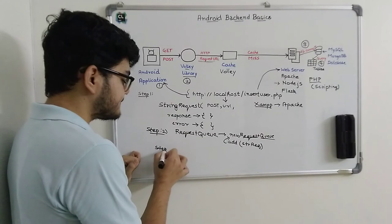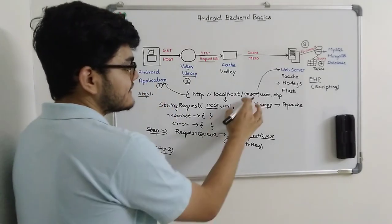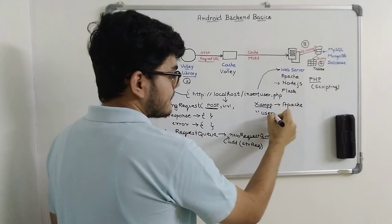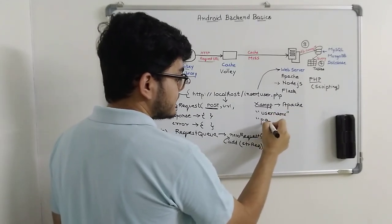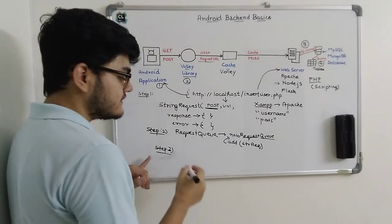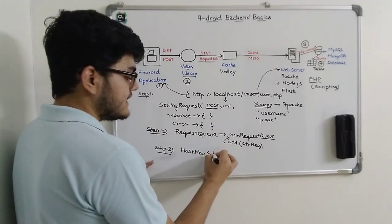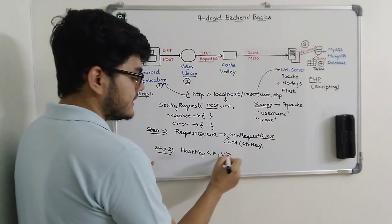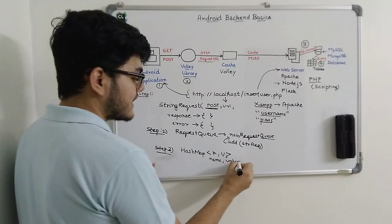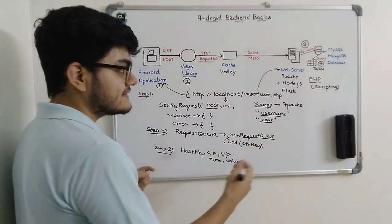One important step — also step three — is to provide the POST parameters. In the insert_user.php file, we are taking POST parameters such as username and password. We will have to pass these two values to the POST method. For that, we are going to create a HashMap. This HashMap will have keys and values — the keys represent the names of the variables, and the values are the actual POST parameter values. We then pass these parameters to the StringRequest. We will see all these steps in the next tutorial.